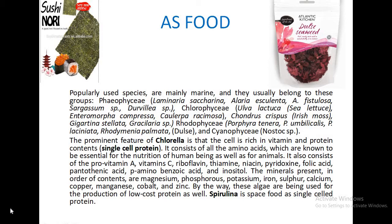A salty confection commonly known as dulse is obtained from the red alga Rhodymenia palmata in Scotland; it is chewed like tobacco. Laminaria is considered a delicacy in the money-poor region of India and is locally called Nungam. Food obtained from Laminaria saccharina is known as kombu; it is rich in carbohydrates, containing 57% carbohydrate.